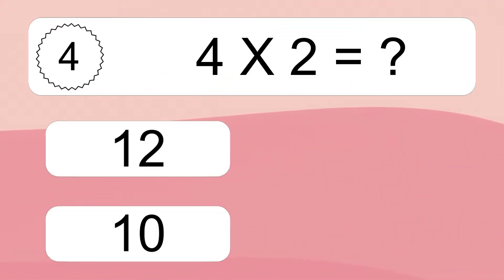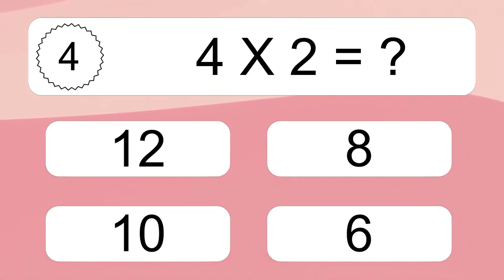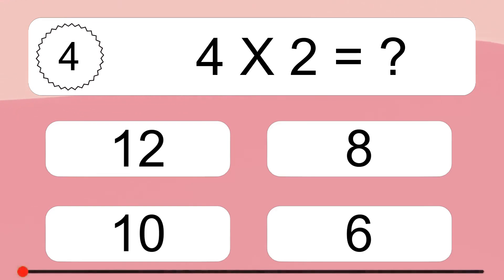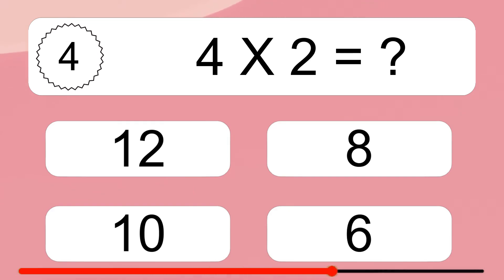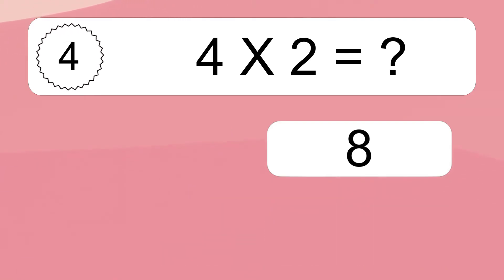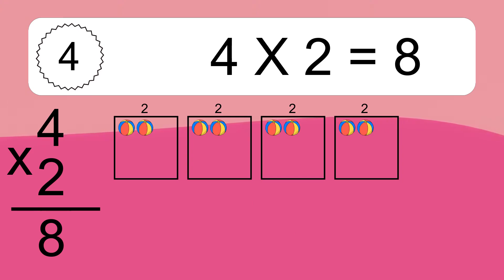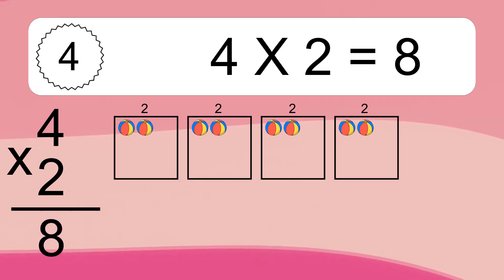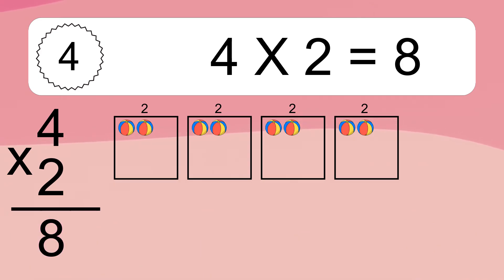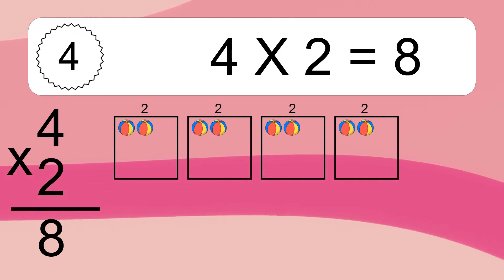4 times 2 equals what? We have 4 boxes, and each box has 2 colorful balls inside. If you count all the balls in all the boxes together, you will have 4 times 2 balls. This equals 8 balls.